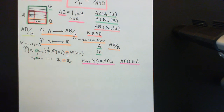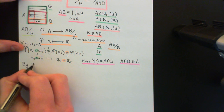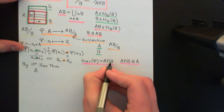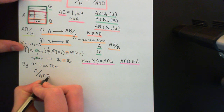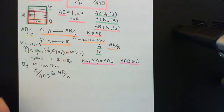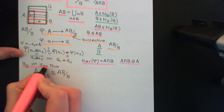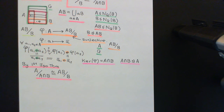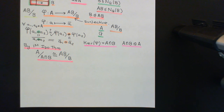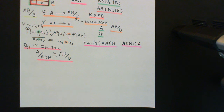By the first isomorphism theorem, the domain group A quotiented out by the kernel A ∩ B is isomorphic to the image of the homomorphism, which is the entire quotient group AB/B. So the second isomorphism theorem is proved via the first isomorphism theorem. I hope the theorem is intuitive to you, and that you understand the rigorous proof via this natural group homomorphism from the subgroup A onto the quotient group AB/B.